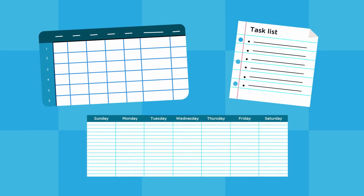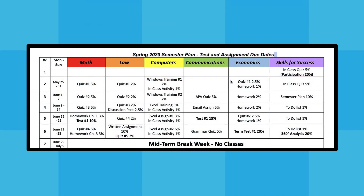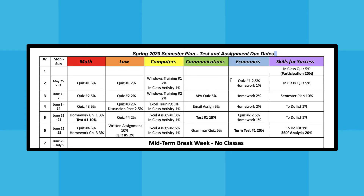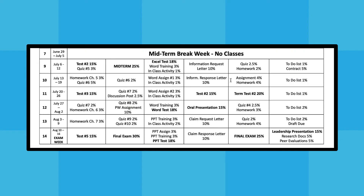Ideally, once you've created your semester plan and weekly schedule, the task list becomes a bridge between upcoming deadlines and your schedule. First, look at your semester plan. What needs to be done for your courses this week? Look ahead — is there anything big coming up in the next few weeks that you should get started on now?